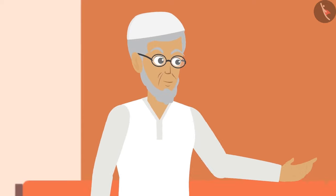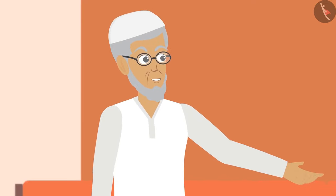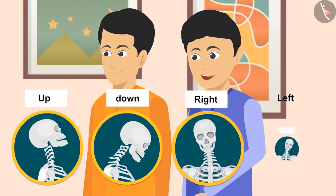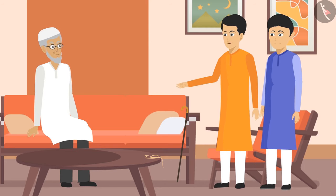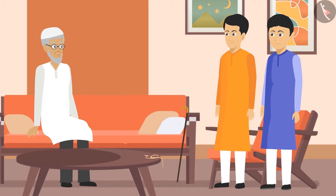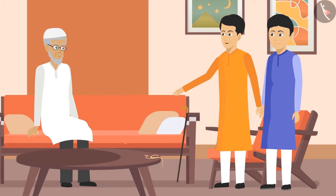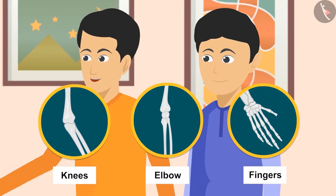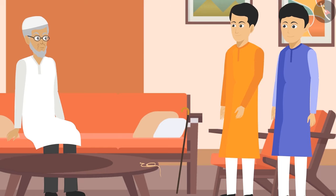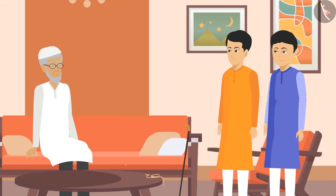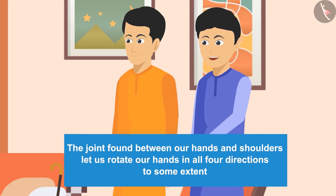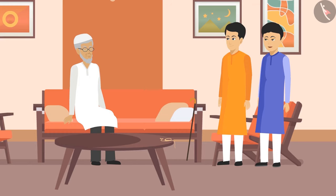'Now tell me — which joint is helpful in which kind of movements?' 'Chacha ji, we can rotate our neck left and right or up and down with the help of pivotal joints. Hinge joints work exactly like the opening and closing of doors — these joints are found in our knees, elbows, and fingers, and body parts can move only in one direction. At ball and socket joints, we can move up, down, left, and right. The joint between our hands and shoulders lets us rotate our hands in all four directions.'